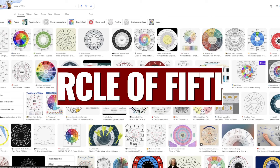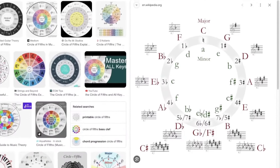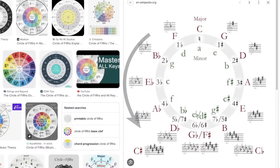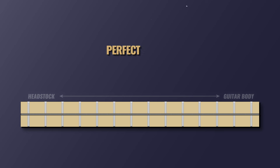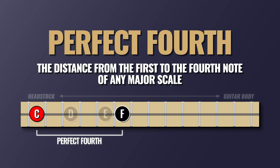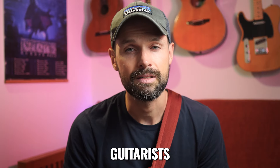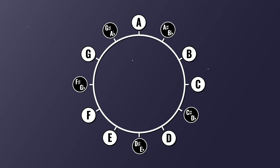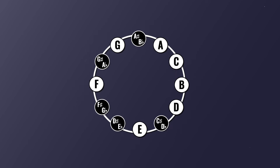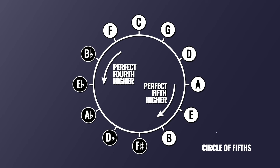It's very easy to Google search a circle of fifths. Read it counterclockwise and you have a circle of ascending perfect fourths. A perfect fourth is the distance from the first to the fourth note of any major scale — five frets horizontally. Ascending fourths is particularly valuable to us guitarists, as you'll notice that arranging the notes in this way forms another closed loop, much like the chromatic scale.